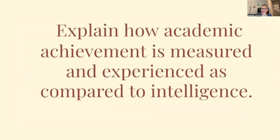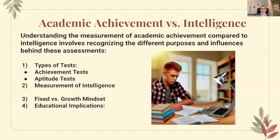On to the last CED question — number four: explain how academic achievement is measured and experienced as compared to intelligence. Understanding the measurement of academic achievement compared to intelligence involves recognizing the different purposes and influences behind these assessments. We have two types of tests. Achievement tests are designed to assess what someone has learned in a specific area of study — such as math, reading, or science — measuring a student's knowledge and skills in particular subjects, reflecting their educational background and prior instruction.